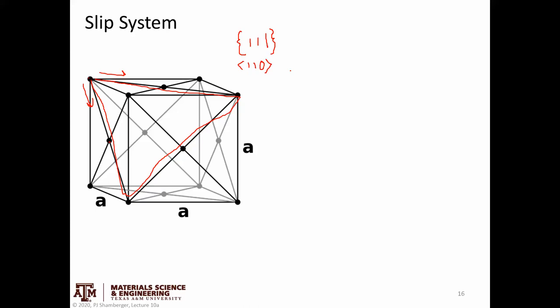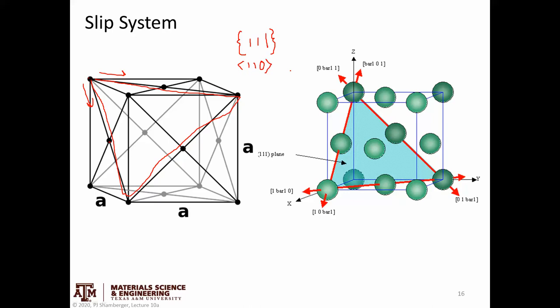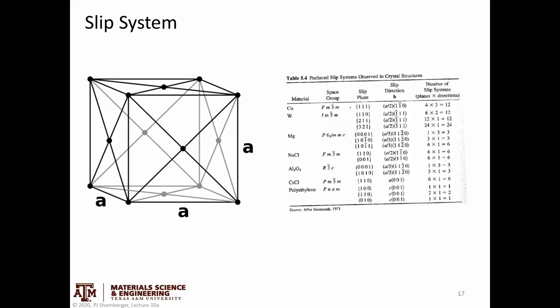This illustrates the different ways a dislocation could slip. Different crystal structures — FCC versus BCC versus hexagonal — have different kinds of slip systems.